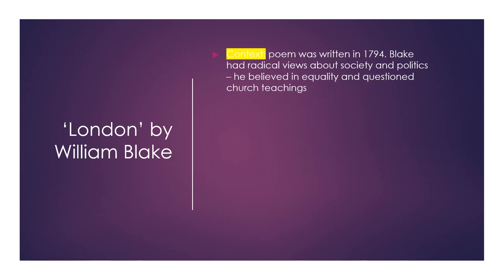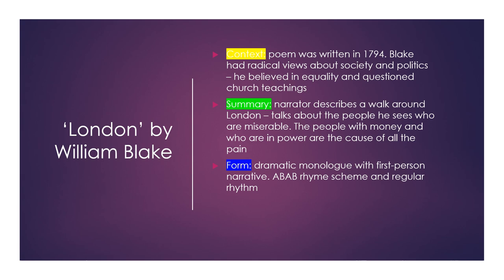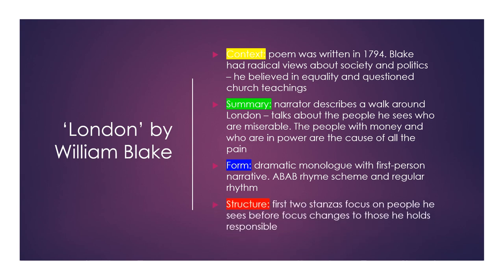London by William Blake. The poem was written in 1794. Blake had radical views about society and politics, radical for that time. He believed in equality and questioned church teachings. The narrator describes a walk around London and talks about the people he sees who are miserable. The people with money and who are in power are the cause of all the pain. It's in the form of a dramatic monologue with a first person narrative and it has an ABAB rhyme scheme and regular rhythm. The first two stanzas focus on people he sees before the focus changes to those he holds responsible.